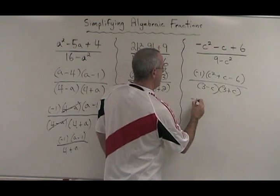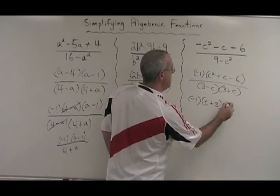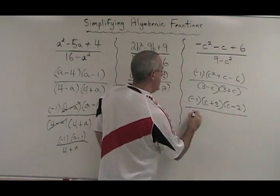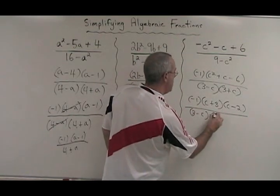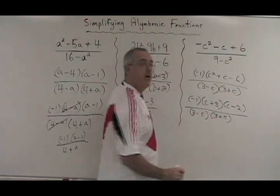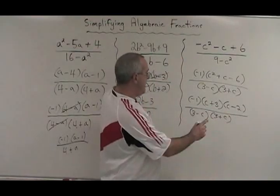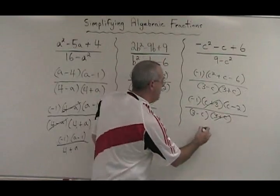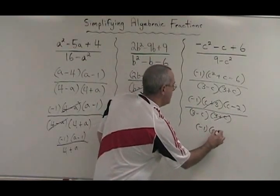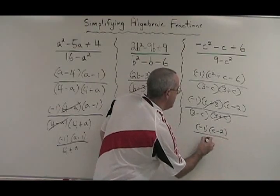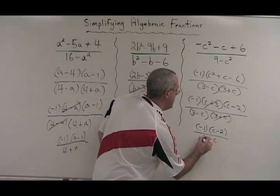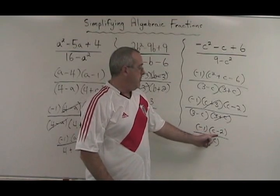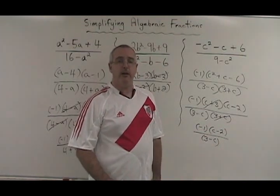I end up with a negative 1, C plus 3, C minus 2 in the numerator, 3 minus C, and 3 plus C in the denominator. I have a C plus 3 and a 3 plus C, which will cancel. My final answer will have the negative 1, it will have C minus 2, and it will have 3 minus C. Again, if you wish, you can multiply the negative 1 into either the numerator or the denominator to get another equivalent correct answer.